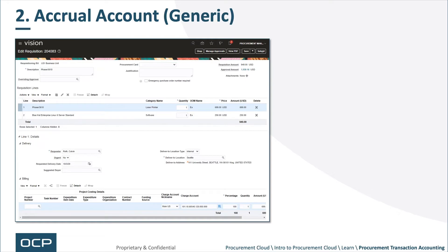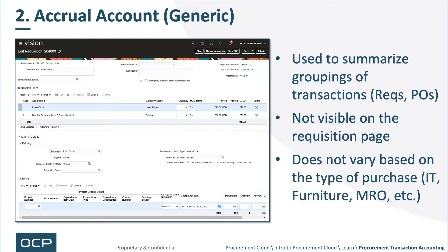The Accrual Account is a generic account used to summarize groupings of transactions — RECs, POs, and invoices, etc. The Accrual Account is not visible on the requisition page, nor on any of the transactions; their Offset Account is visible on the transaction pages. It does not vary based on the type of purchase — so whether IT, Furniture, or MRO, the Accrual Account remains the same.